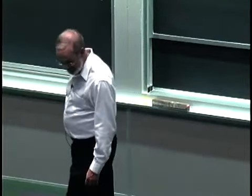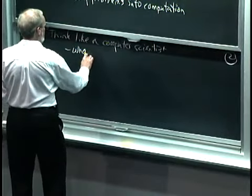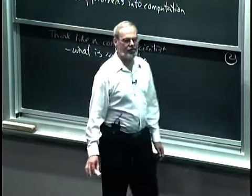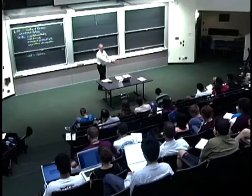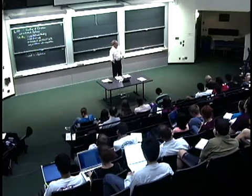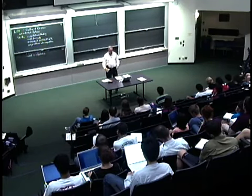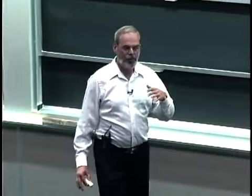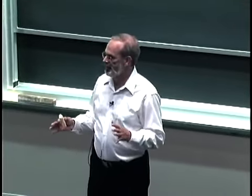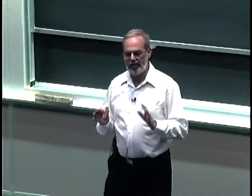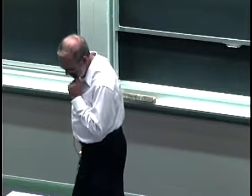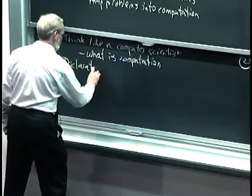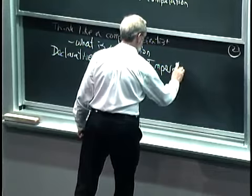What is computation? I want to separate out the mechanism — the computer — from computational thinking. The artifact should not be what's driving this; it should be the notion of what does it mean to do computation. To answer that, I'm going to ask a philosophical question: what is knowledge? I'm going to suggest I can divide knowledge into two categories: declarative and imperative knowledge.